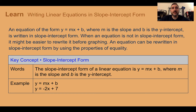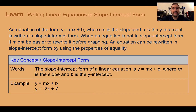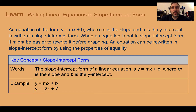An equation of the form y equals mx plus b, where m is the slope and b is the y-intercept, is written in slope-intercept form. When an equation is not written in slope-intercept form, it might be easier to rewrite it before graphing. An equation can be rewritten in slope-intercept form by using properties of equality from Module 1 and solving for y.